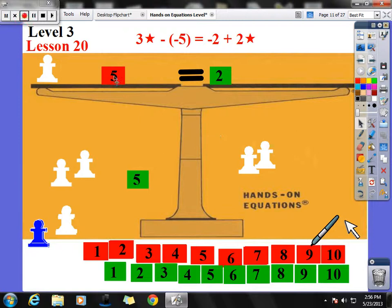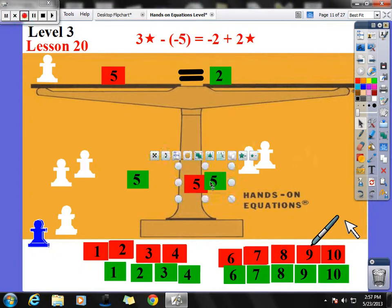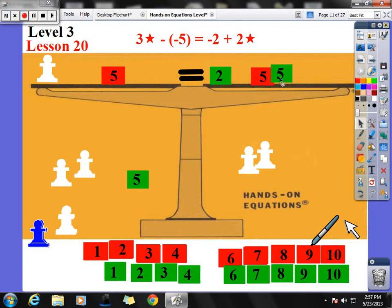To do that, I need to take away a 5 from both sides. I don't see a 5 over here, so let's add a 0. If I can add a 0 on this side, now I can take away positive 5. And now I have star equals negative 7. Star equals negative 7.